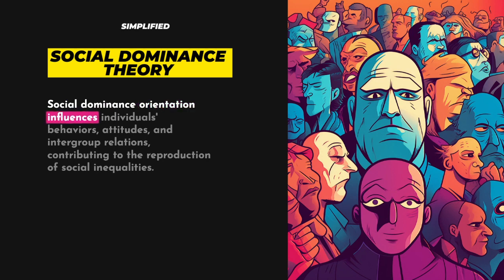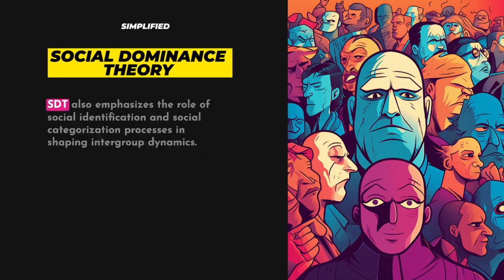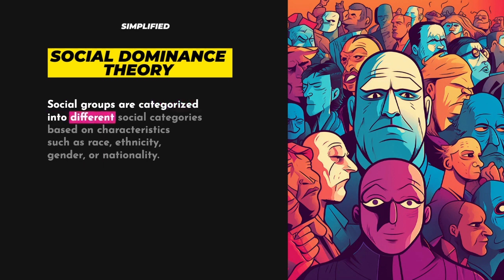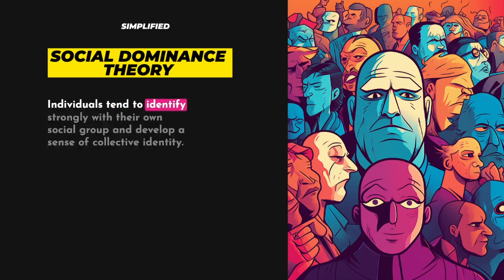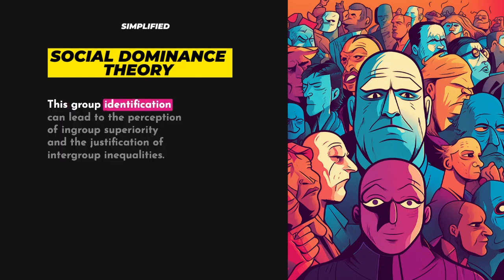Social dominance orientation influences individuals' behaviors, attitudes, and intergroup relations, contributing to the reproduction of social inequalities. SDT also emphasizes the role of social identification and social categorization processes in shaping intergroup dynamics. Social groups are categorized into different social categories based on characteristics such as race, ethnicity, gender, or nationality. Individuals tend to identify strongly with their own social group and develop a sense of collective identity, which can lead to the perception of in-group superiority and the justification of intergroup inequalities.